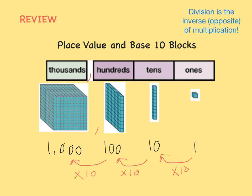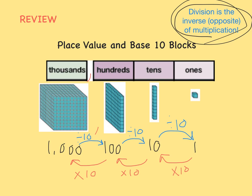Well, division is just the inverse or opposite of multiplication. So 10 divided by 10 equals 1. 100 divided by 10 equals 10. And 1,000 divided by 10 equals 100. When you go from a bigger place to a smaller place, you just divide by 10.